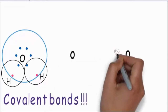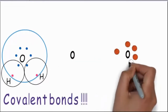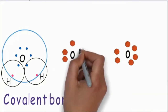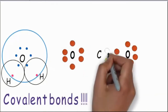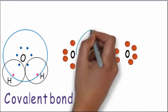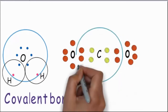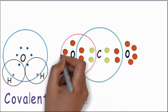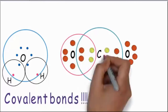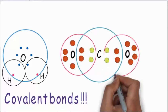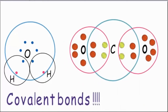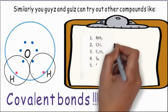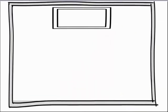Similarly, carbon has 4 electrons in the outermost shell and oxygen has 6. Carbon requires 4 more electrons so it shares 2 each from the 2 oxygens, and oxygen shares 2 electrons from the carbon atom. And this time we have our CO2 molecule ready. Similarly, you can try CH4, NH3 and C2H6.